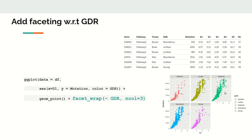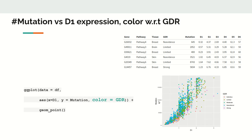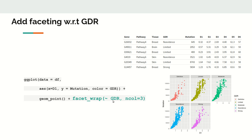We call facet_wrap with the formula tilde gdr, meaning split the plot with respect to the gdr column, since the color is already given with respect to gdr. We set number of columns equal to 3. The individual colors will now be split into separate subplots, but x and y remain constant — that means the plot of d1 versus mutation is preserved in each of the gdr categories.